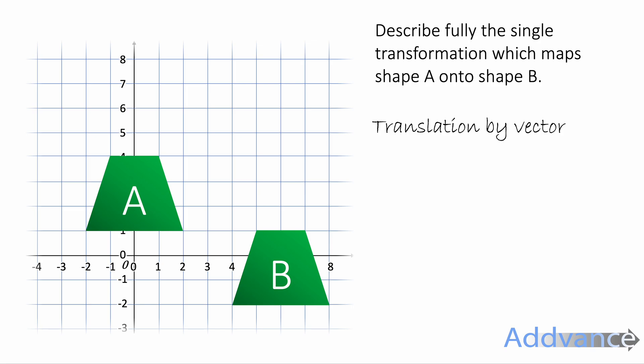But how is it being translated? We compare two matching corners like this. We count how far they go across and how far they go down. To go from shape A to shape B goes 6 across and minus 3 down. And that is the vector 6 minus 3. So it's translation by vector 6 minus 3.